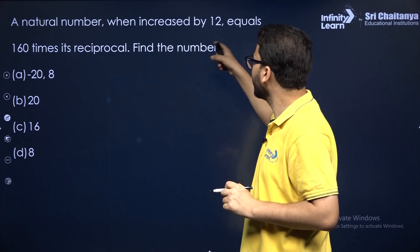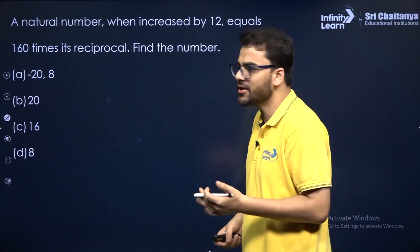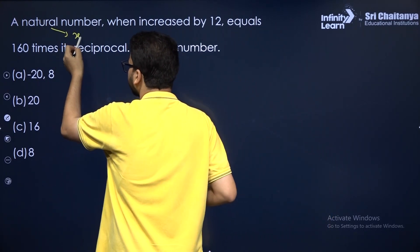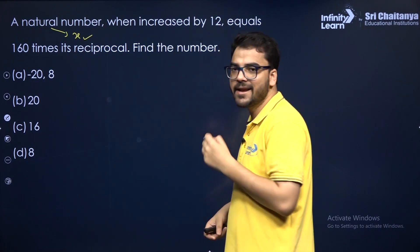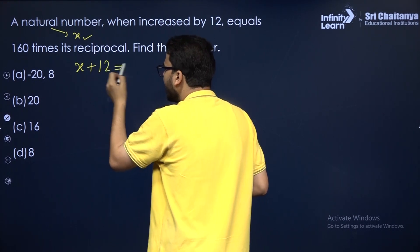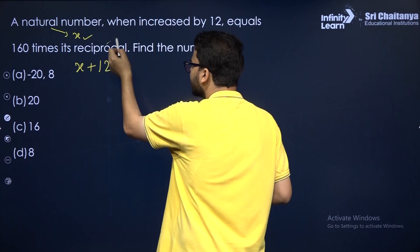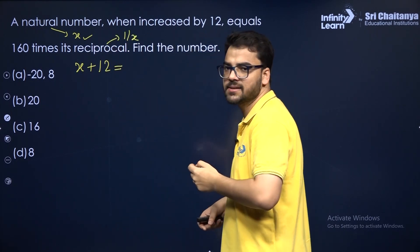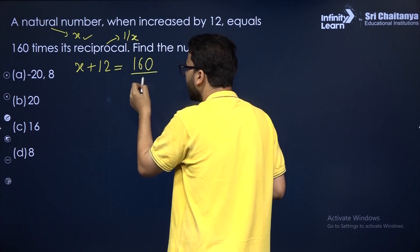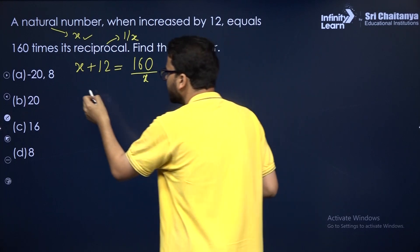A natural number, when increased by 12, equals 160 times its reciprocal. Suppose the natural number is X. When increased by 12 it equals 160 times its reciprocal, and the reciprocal of X is 1/X. So 160 times its reciprocal is 160/X. Just simplify from here.